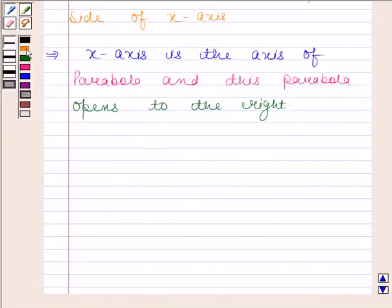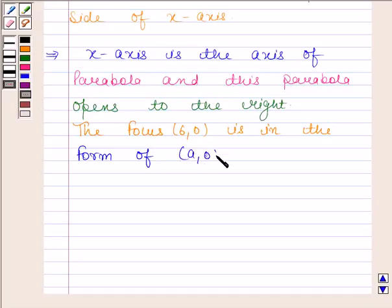Now here, the coordinates of the focus, that is (6,0), is in the form of (a,0).